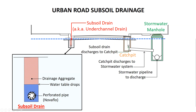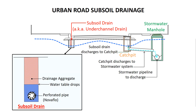This animation shows what happens when we install sub-soil drains. They remove the sub-soil water causing the water table to dip around the drains, resulting in the water table dropping to below the sub-base. Sub-soil drains may also be called under-channel drains. A typical sub-soil drain consists of a perforated pipe with drainage aggregate — gravel with no fines — to allow maximum water flow to the pipe. The subsurface water flows into the pipe through the perforations, then flows along the pipe to disposal.